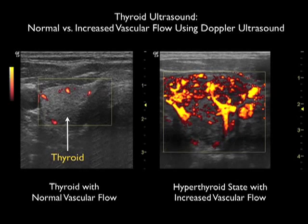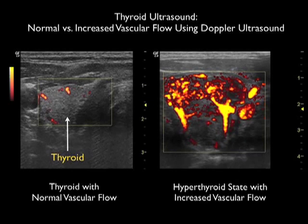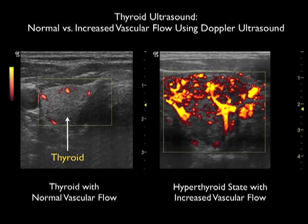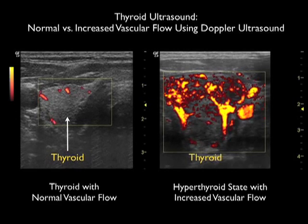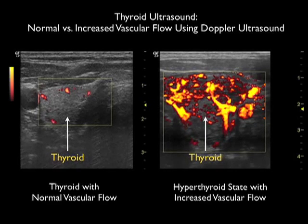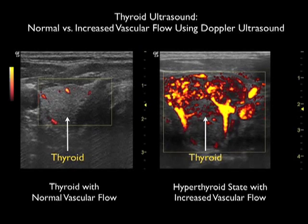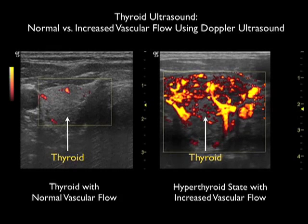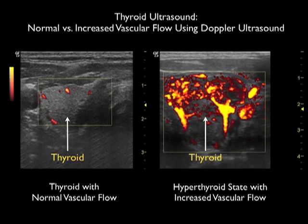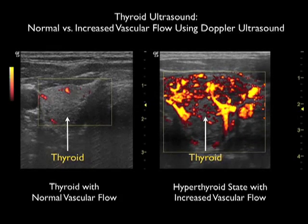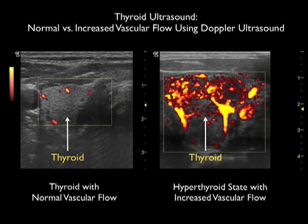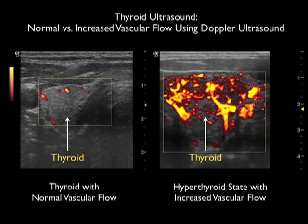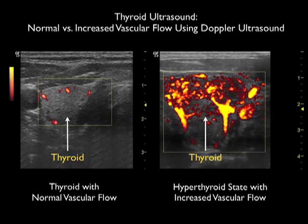First of all, we notice the obvious difference in size between a normal thyroid, as seen to the left, and our patient with Graves' disease to the right, where the thyroid appears much larger than in a normal state. Here we have the probe oriented in a short axis, or lateral orientation, and we have the marker dot oriented lateral.